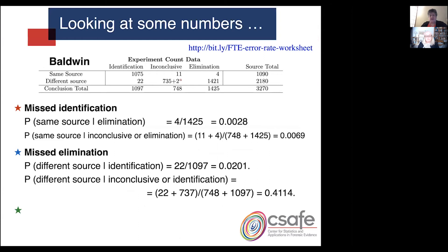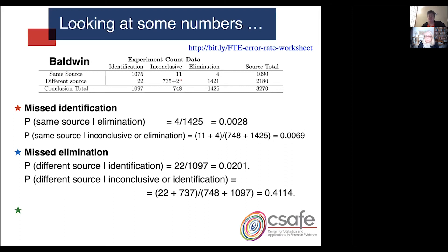I've thrown a lot of numbers at you. We've created a spreadsheet to keep all of these pieces straight — you can follow the Bitly link to our Google spreadsheet. Here we have results from the Baldwin study: overall there were 3,270 comparisons made, 1,090 from same source comparisons, and 2,180 from different source comparisons. Those six numbers essentially determine all of the error rates I've been discussing.